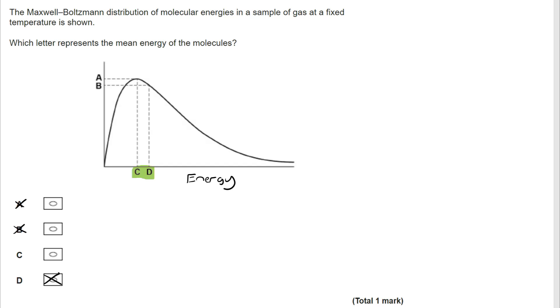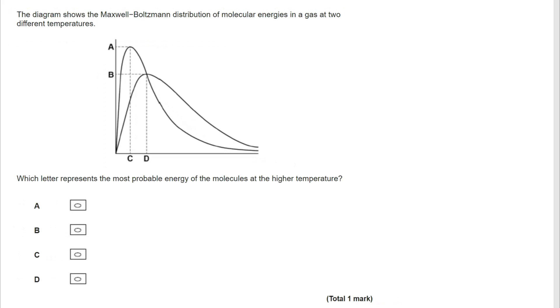Now, the reason that the mean energy is set slightly to the right is that there are, as you see, a small number of particles with very high energies. And that skews the average to the right. It skews the mean. So D is what we're looking for on there. Next question.